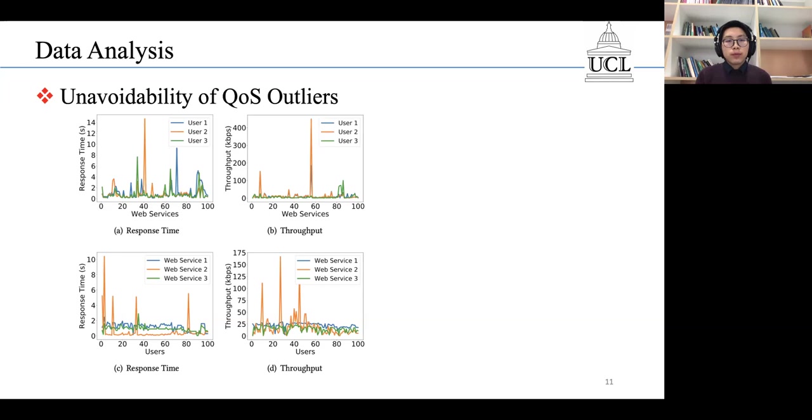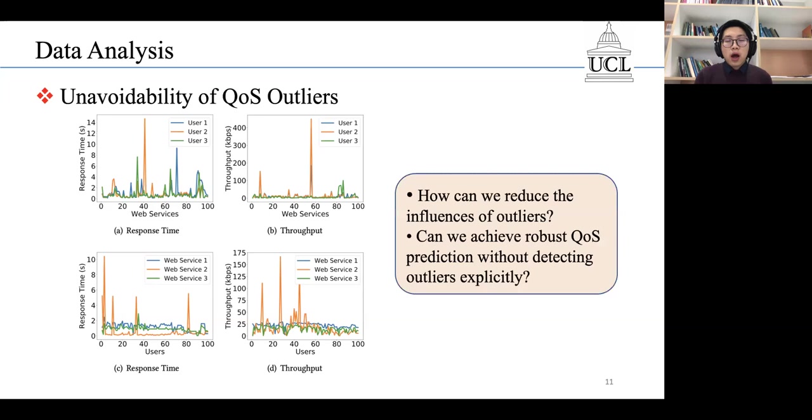So, the question is, how can we reduce the influence of outliers? The straightforward way would be to detect the outliers and then remove the outliers from the dataset.